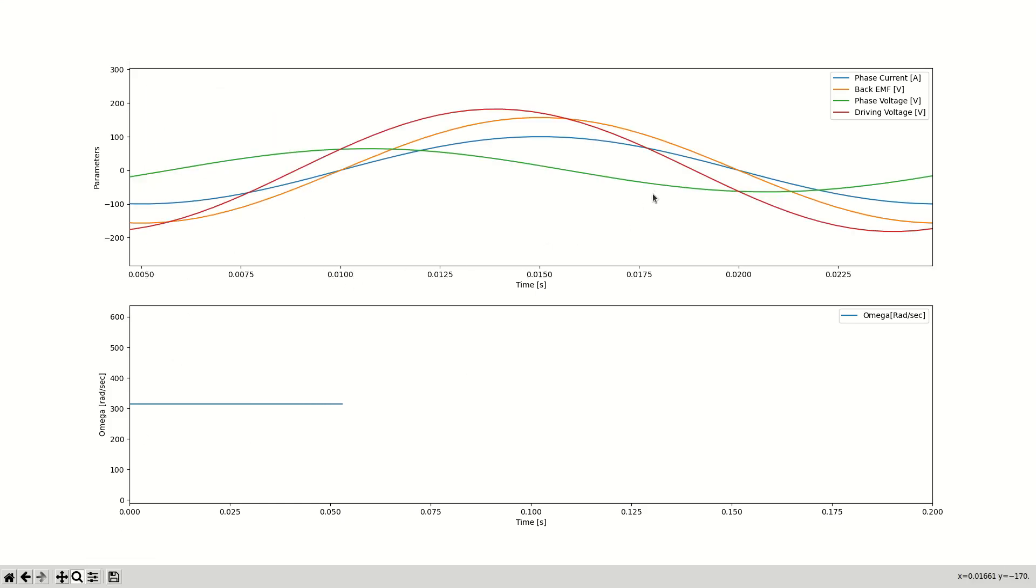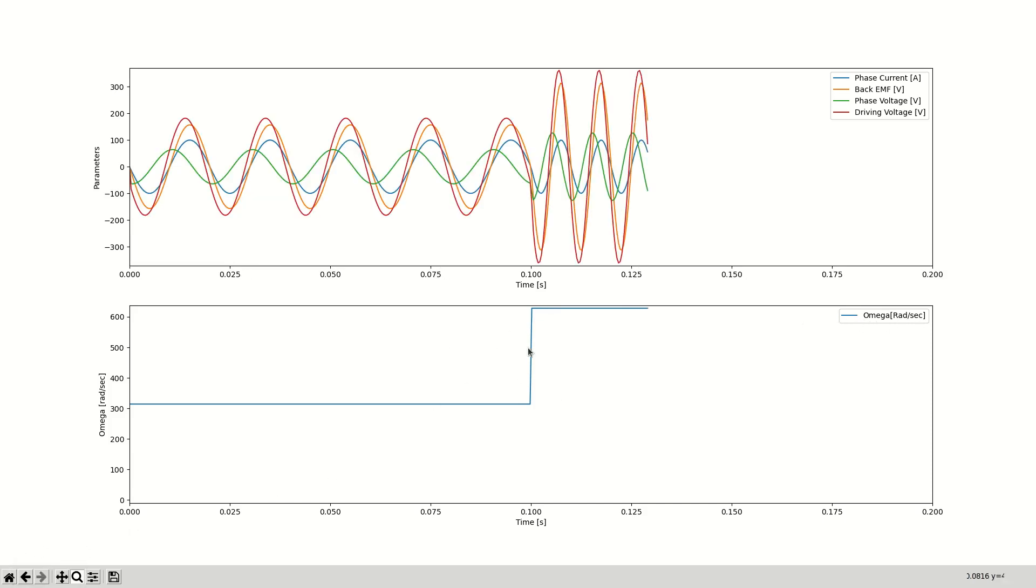And each time I'll show the back EMF, phase current, phase voltage, and driving voltage. And at the bottom here, I'll show changes in parameters, such as speed, or the current in the D and Q axes.